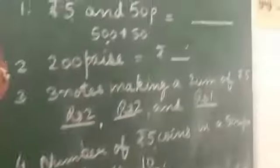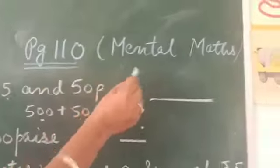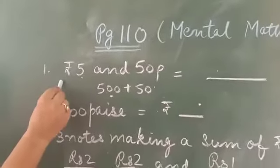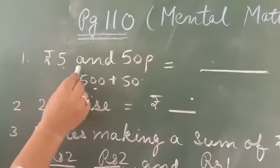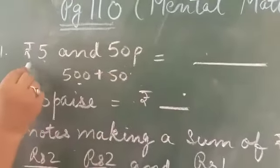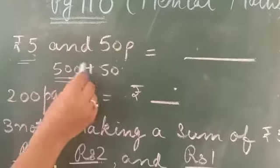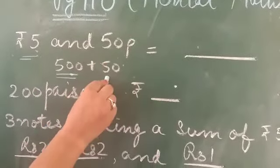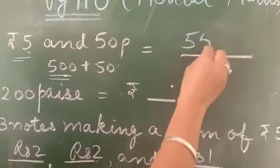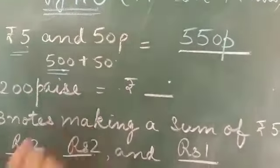Next: page number 110, mental math. First sum is 5 rupees and 50 paise. Now you have to convert 5 rupees - how much is it? 500 paise. 50 paise is added. So what is the answer? 550 paise. Clear?